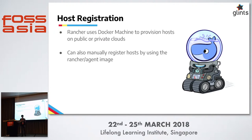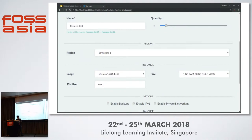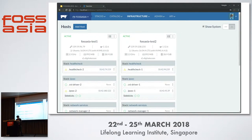For host registration, it uses Docker Machine to provision hosts on public clouds. For us, because we are in Indonesia — and Indonesia has strict data protection laws that don't want citizens' data outside the country — what we can do with Rancher is go to any public VPS provider, get a server, and register it as a Rancher host to manage entirely from Rancher. Not much user intervention is required.